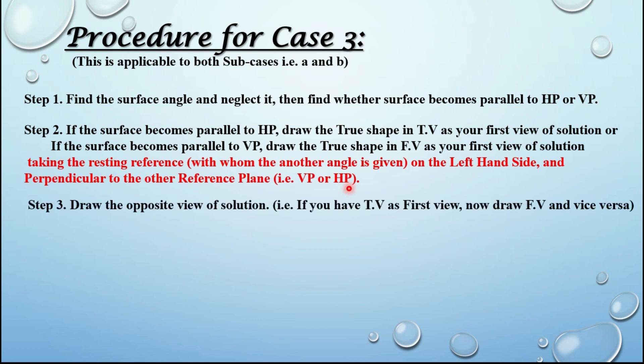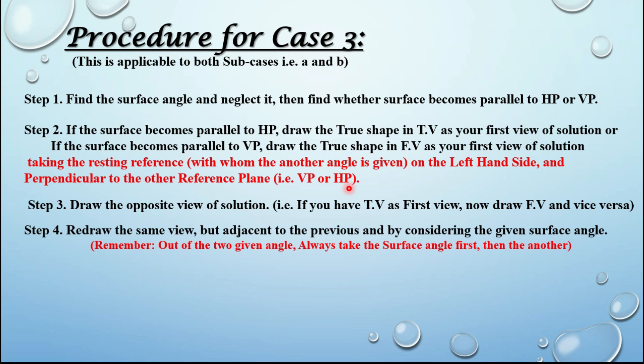Step three: draw the opposite view of the solution — that is, if you have drawn the top view first, now draw the front view, and vice versa. Step four: redraw the same view again but adjusted to the previous by considering the given surface angle. Remember, out of the two given angles, always take the surface angle first, then the other.